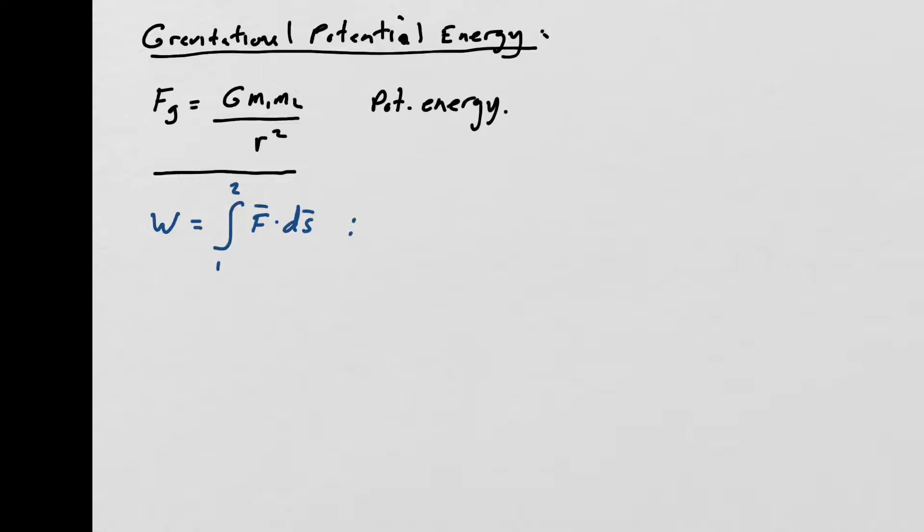From this, we derive what we call the work energy theorem, which said that work was equal to the change in kinetic energy, and work was also equal to the negative change in potential energy, depending on how we defined the orientation of the system would dictate the negative sign. From this, we said that if delta K is equal to a negative delta U, another way of rearranging that is saying that delta K plus delta U is equal to 0. And if we define total energy as K plus U, then for most systems, delta E is equal to 0, and this is what we called conservation of energy.